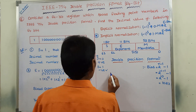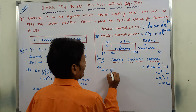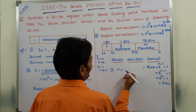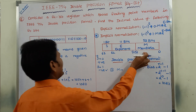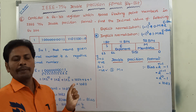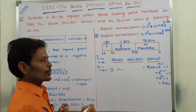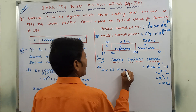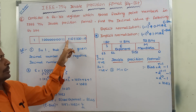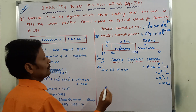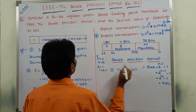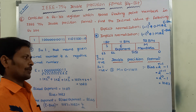Next, we have to find out the M value — the mantissa. The mantissa is always a fractional value, so it starts with zero point. The mantissa value from the given bits is: 1, 1, 0, 1, 1, and the remaining bits are zeros.